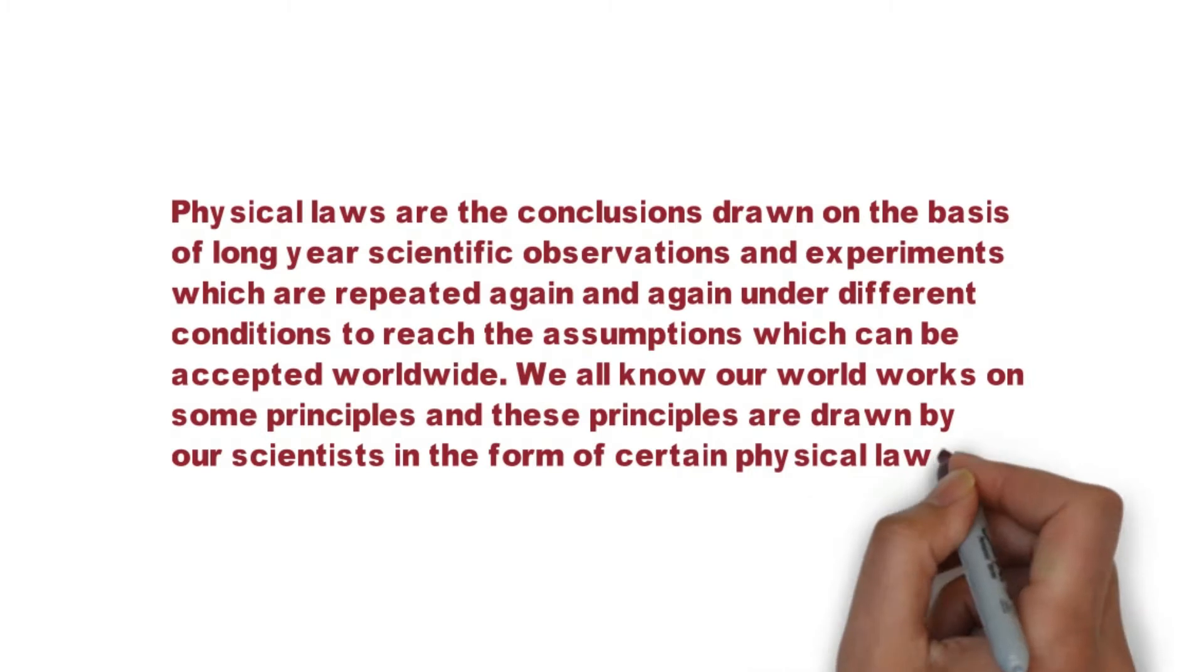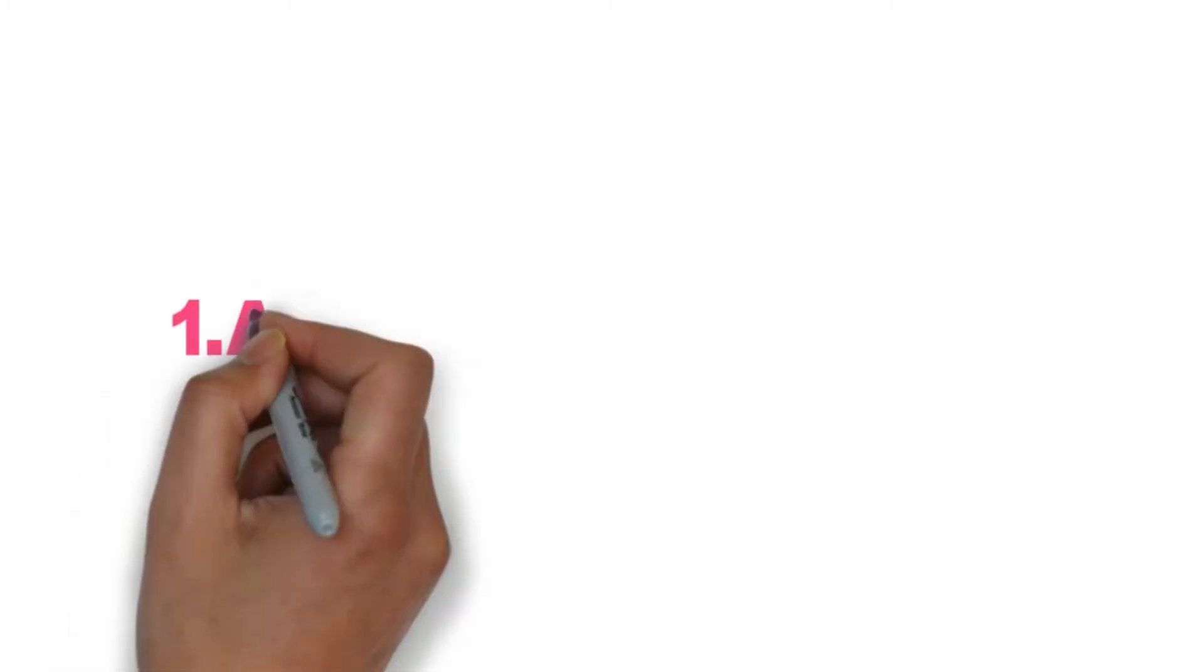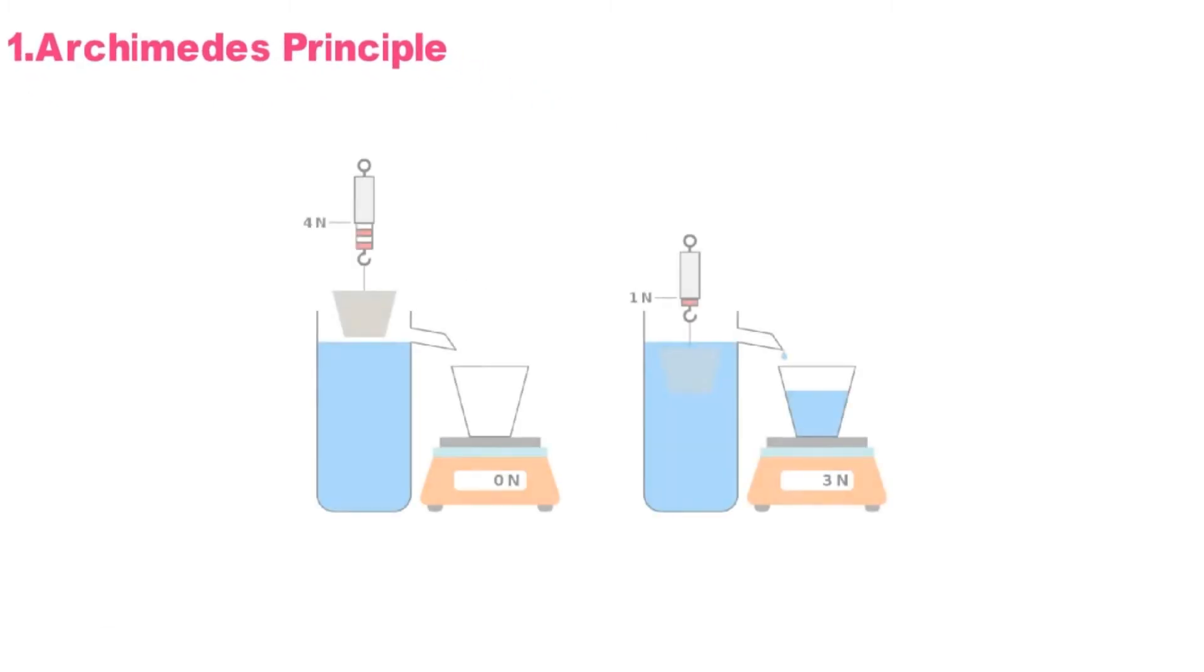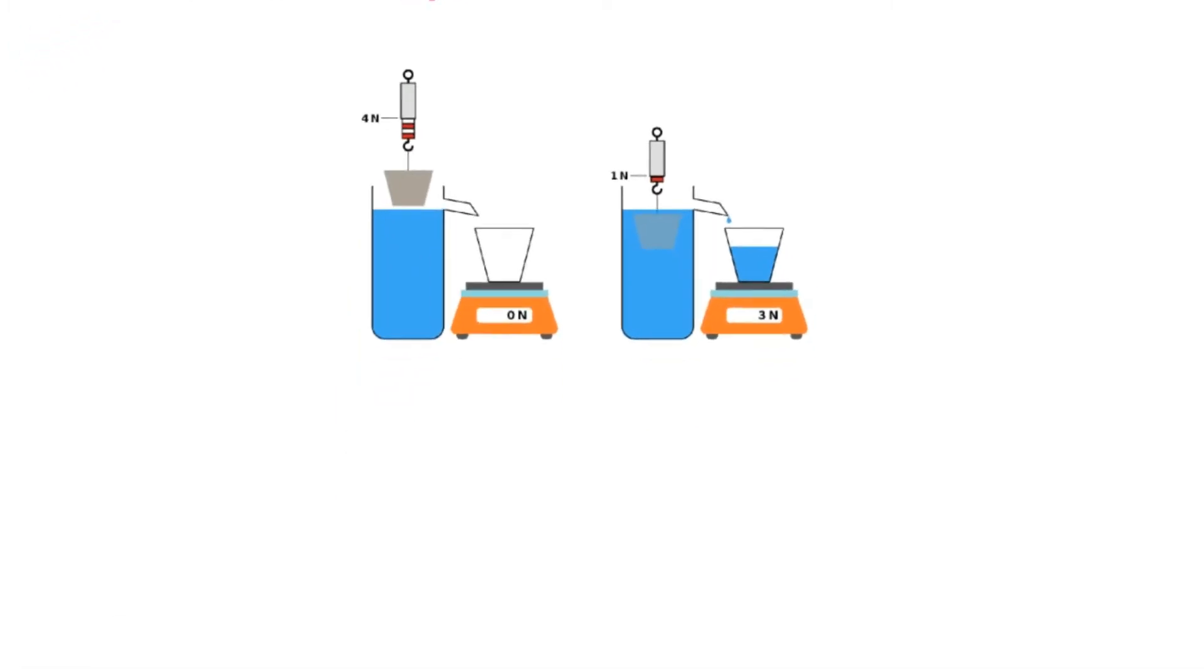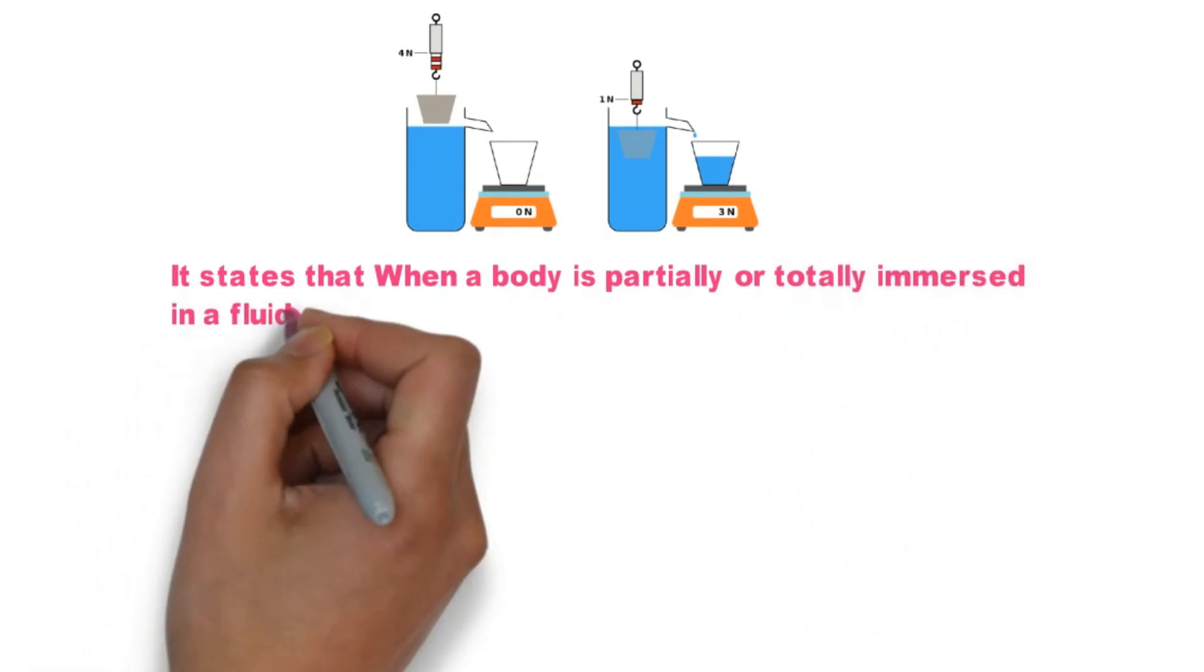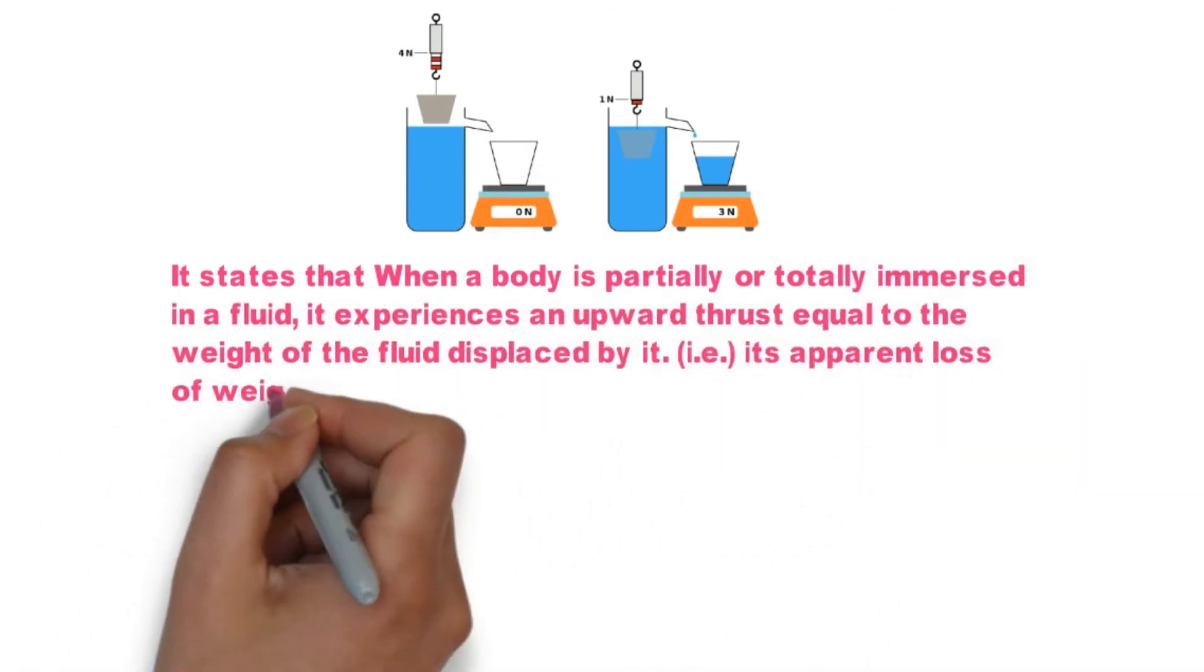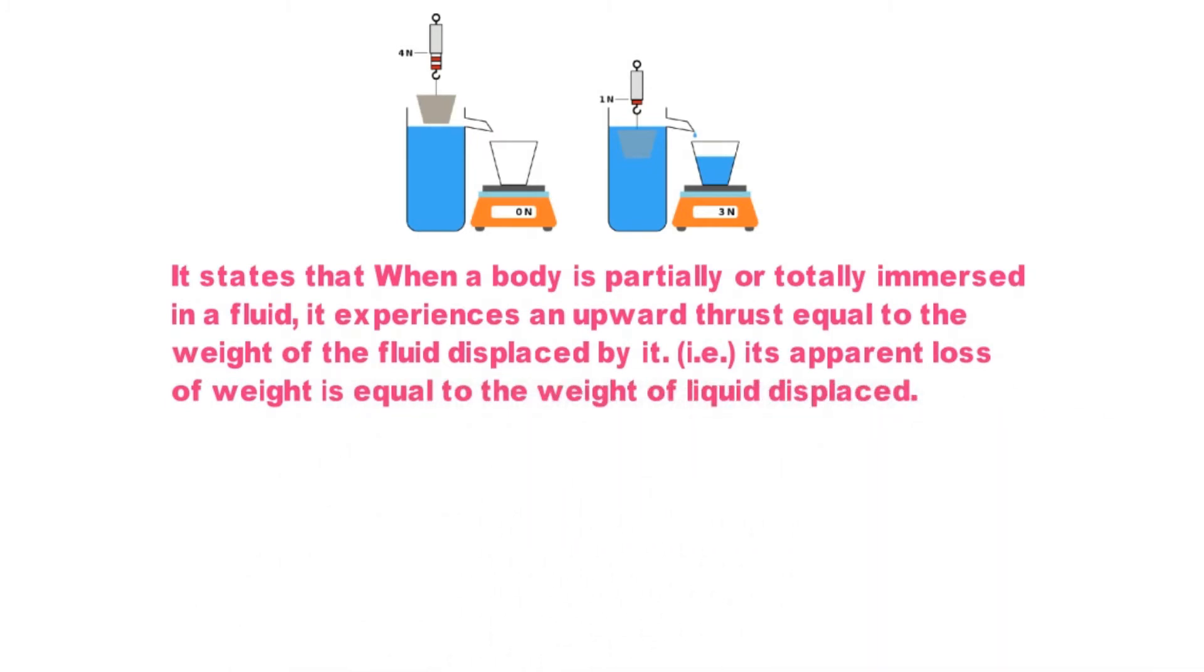Following are the most important physics laws. 1. Archimedes Principle. It states that when a body is partially or totally immersed in a fluid, it experiences an upward thrust equal to the weight of the fluid displaced by it. A body's apparent loss of weight is equal to the weight of liquid displaced.